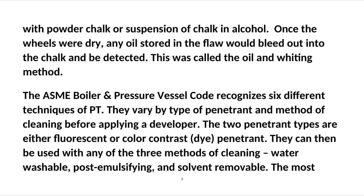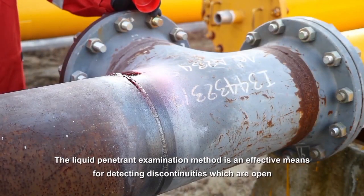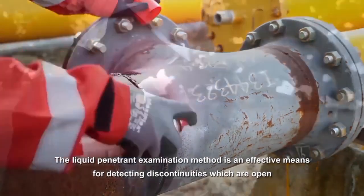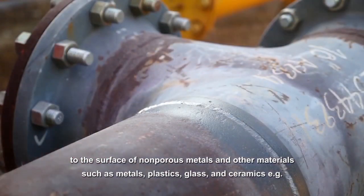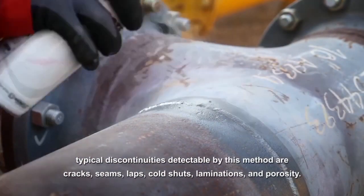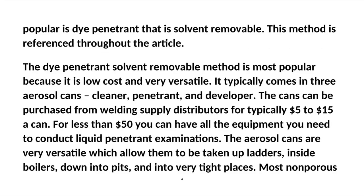The ASME Boiler and Pressure Vessel Code recognizes six different techniques of PT. They vary by type of penetrant and method of cleaning before applying a developer. The two penetrant types are either fluorescent or color contrast dye penetrant. They can then be used with any of the three methods of cleaning: water washable, post emulsifying, and solvent removable. The most popular is dye penetrant that is solvent removable, and this method is referenced throughout.